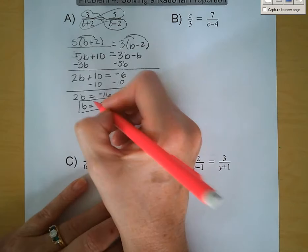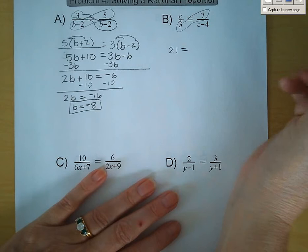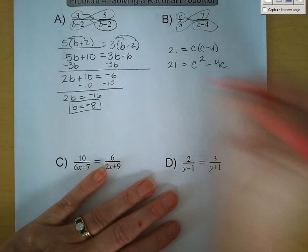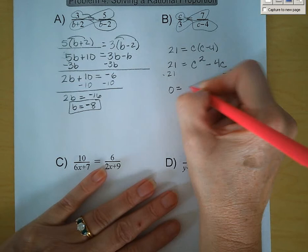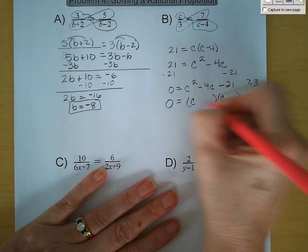Next up, we've got 3 times 7, which is 21, is equal to c times the quantity c minus 4. In order to solve that we need to factor. Get 21 onto the right-hand side so we're equal to 0: c squared minus 4c minus 21. We're looking for products of negative 21 that add up to negative 4, so it'll be negative 7 and positive 3. So c equals 7 and c equals negative 3.